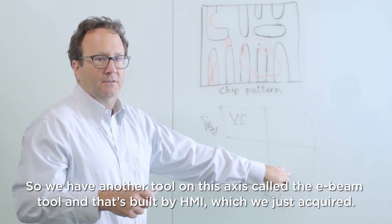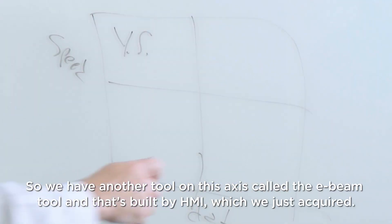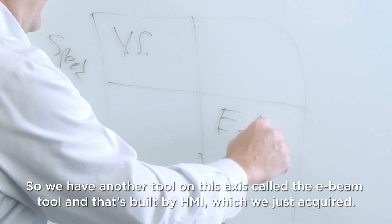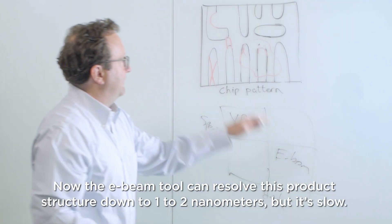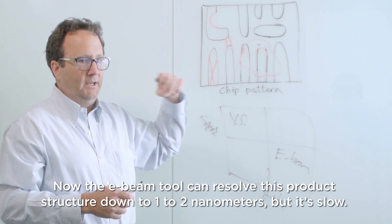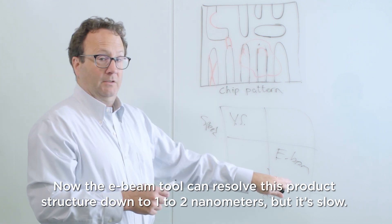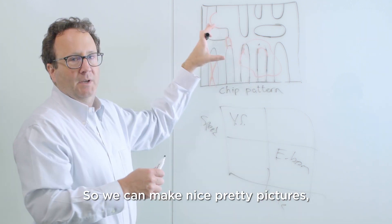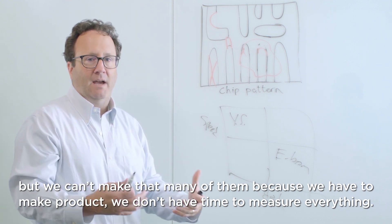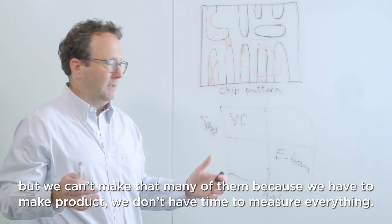So we have another tool on this axis called the e-beam tool. And that's built by HMI which we just acquired. Now the e-beam tool can resolve this product structure down to one nanometer. One to two nanometers. But it's slow. So we can make nice pretty pictures but we can't make that many of them because we have to make product. We don't have time to measure everything.